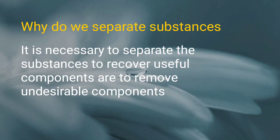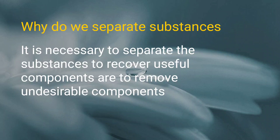Why do we need to separate substances? There are different reasons. First, we separate two different but useful components — both of them can be used. For example, two different types of fruits in a basket: whatever we like, we can choose and separate based on our requirement. Second, we remove impurities or harmful components — the best example is separation of stones from rice.